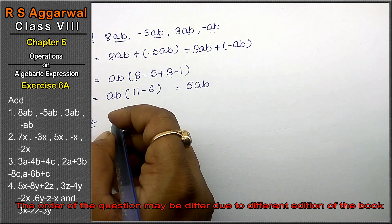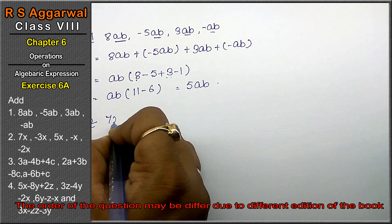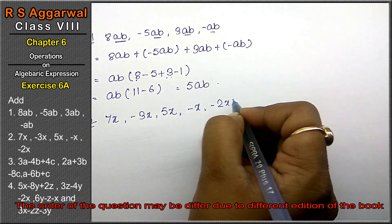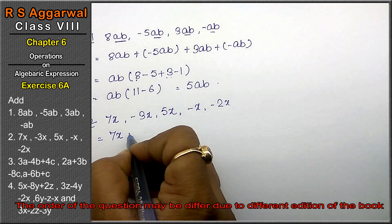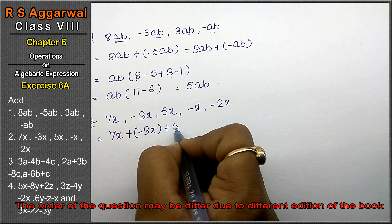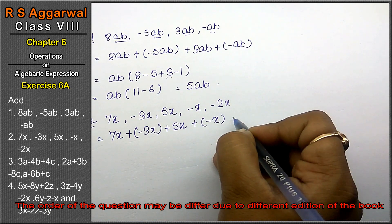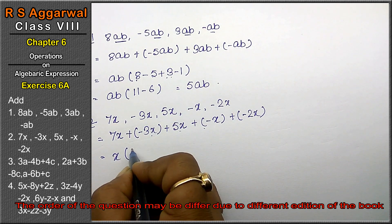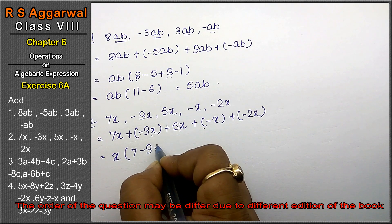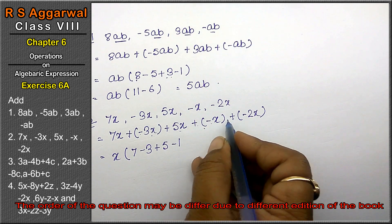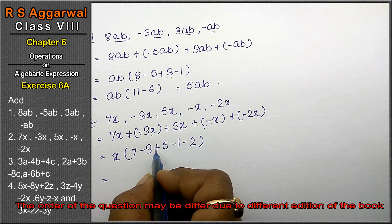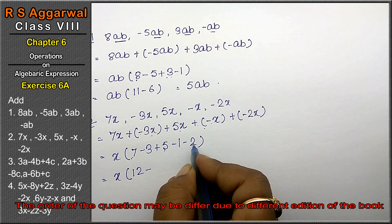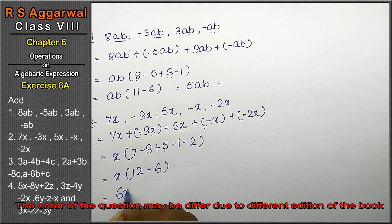Let's do question number 2 of exercise 6a, that is algebraic expression. Question number 2 is: add 7x, minus 3x, 5x, minus x, minus 2x. We write: 7x plus minus 3x plus 5x plus minus x plus minus 2x. Since x is the common variable, we take x outside and get: (7 + (-3) + 5 + (-1) + (-2))x. The positives are 7 plus 5 equals 12, and the negatives are 3 plus 1 plus 2 equals 6. So 12 minus 6 equals 6x is the answer.